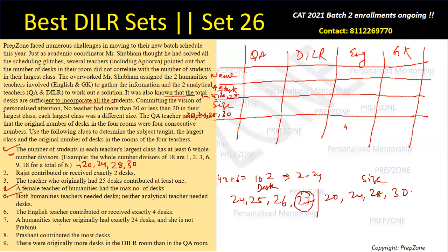From hint seven, a humanities teacher originally had exactly 24 desks. So the two humanities teachers map to 24 and 27 desks — meaning English and GK are assigned desk values 24 and 27.